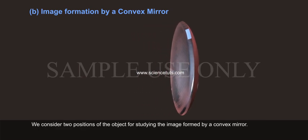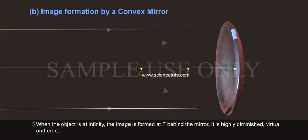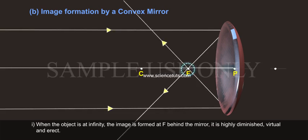We consider two positions of the object for studying the image formed by a convex mirror. First, when the object is at infinity, the image is formed at F behind the mirror. It is highly diminished, virtual and erect.